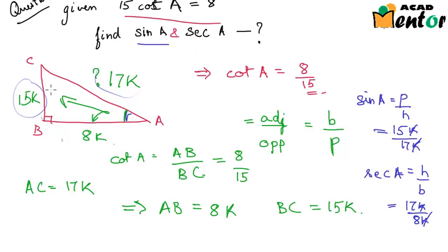If they would have asked us what was cot C or sin C, we could have found that out because for angle C, perpendicular would have been AB and the base would have been BC. Just remember that and we can find out all the ratios.